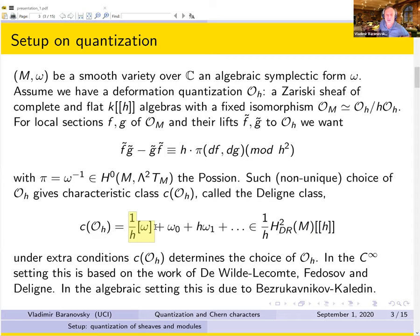In the C∞ setting this theory is based on work of de Wilde–Lecomte, then Fedosov, and later Deligne. In the algebraic setting, Rouquier and Kaleden studied this class and formulated conditions under which it contains full information about the choice of O_H. This always holds for projective or affine M, and in general is a Hodge theory condition.